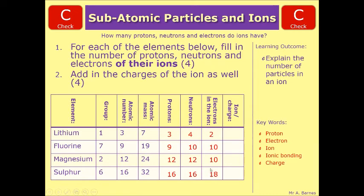And then the charge of your ion. Lithium loses 1, becomes Li+. Fluorine gains 1, becomes F-. Magnesium loses 2, becomes Mg2+. And sulfur gains 2, becomes S2-. So 1 mark for this row, 1 mark for this row, 1 mark for this row, 1 mark for this row, and then 1 mark for each of these, which will give you 8 in total.